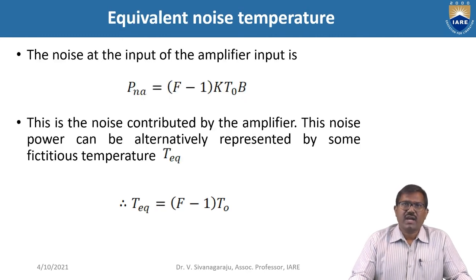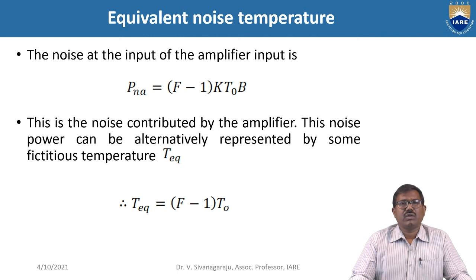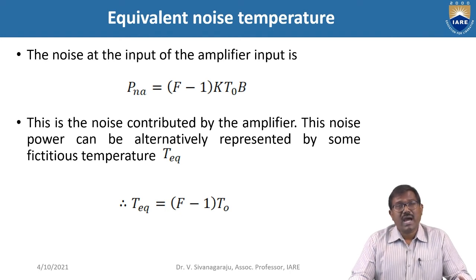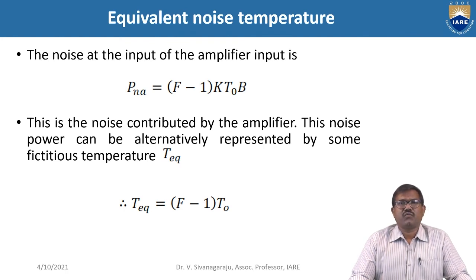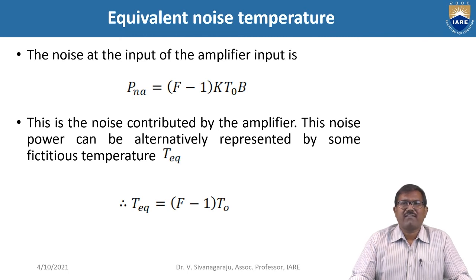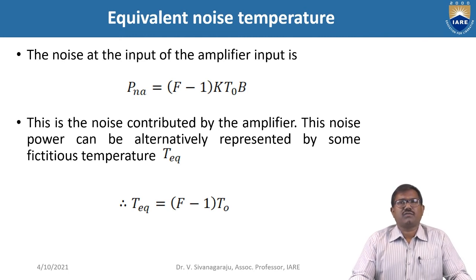The noise at the input of the amplifier is P_na equal to F minus 1 into kT0B. This noise power controlled by the amplifier can be alternately represented by an equivalent noise source at the input of the amplifier, with P_na equal to F minus 1 into T0.